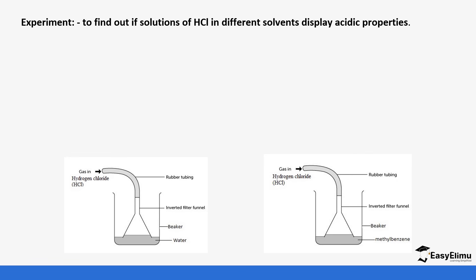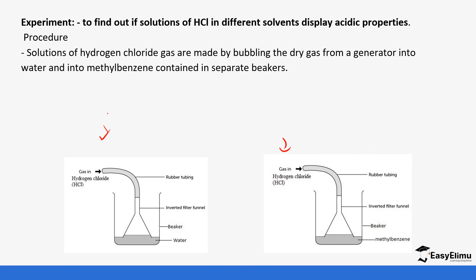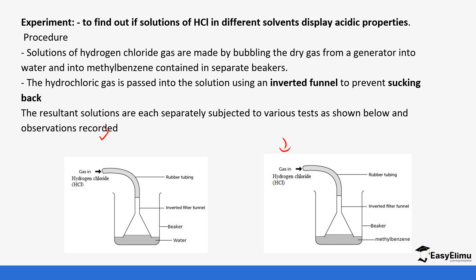If you were to do an experiment to show these properties, hydrochloric gas is bubbled through a beaker containing water and another one is bubbled through a beaker containing methylbenzene. Hydrochloric acid is passed to the solution using an inverted funnel to prevent suck back. The resultant solutions are each separately subjected to various tests as shown.